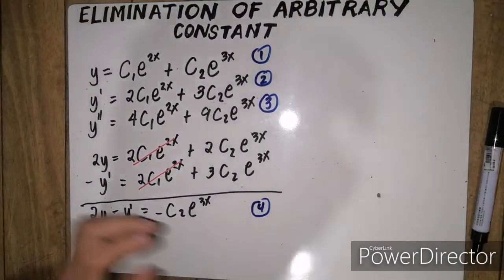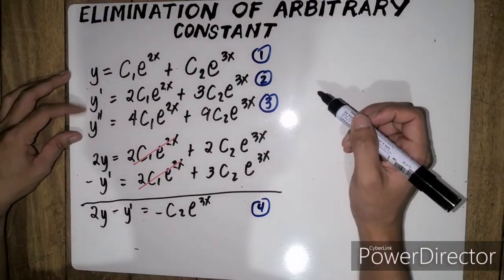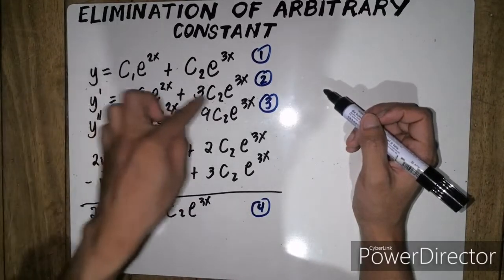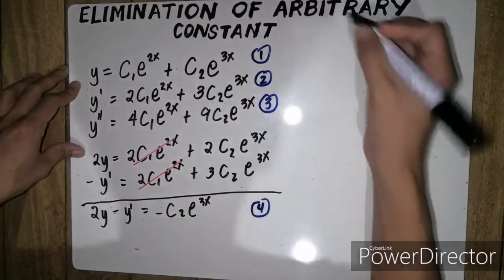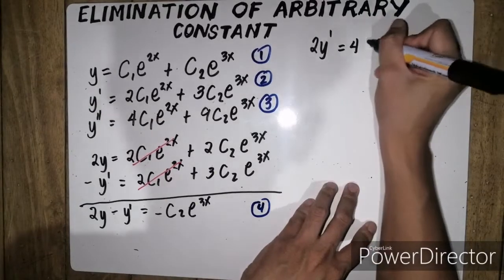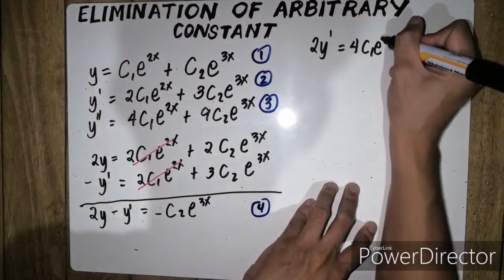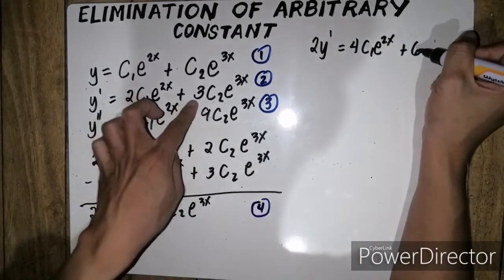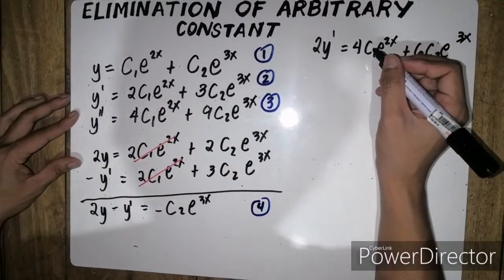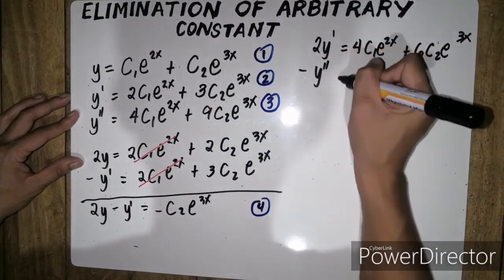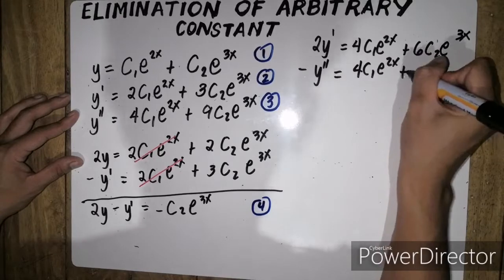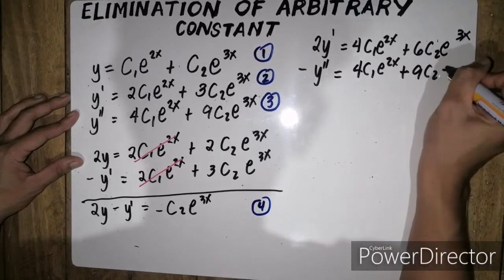The next thing is, ito naman dalawang equation na ito. So, para makancel ko dito si first arbitrary constant, i-multiply ko yung buong equation by 2 para maging 4 din siya. We have, 2y prime equals 4 c1e to the 2x plus, times 2 din yun, 6 c2e to the 3x. Minus y double prime equals 4 c1e to the 2x plus 9 c2e to the 3x.